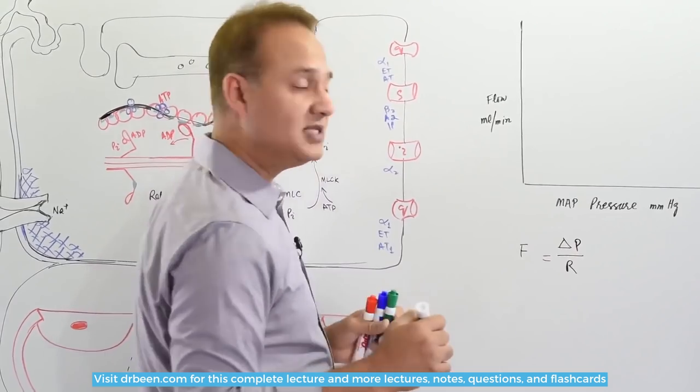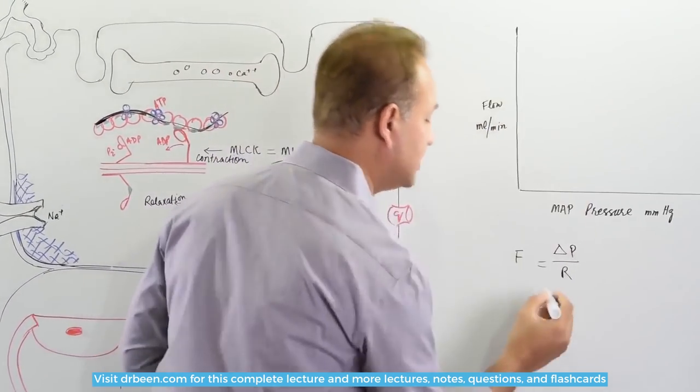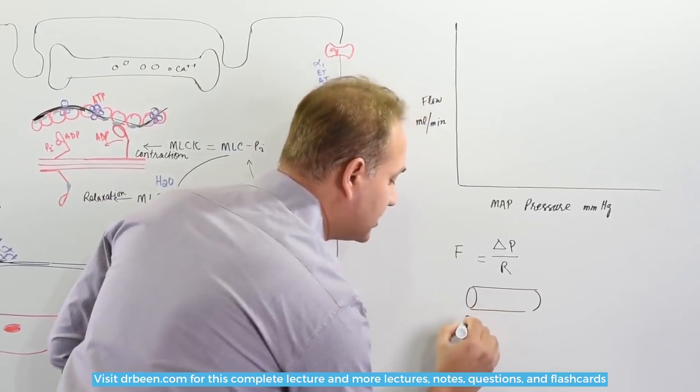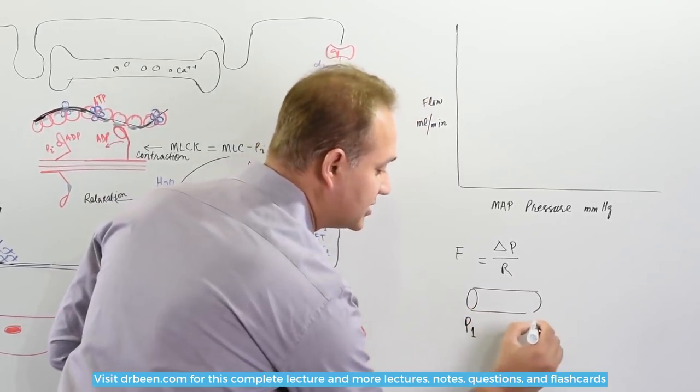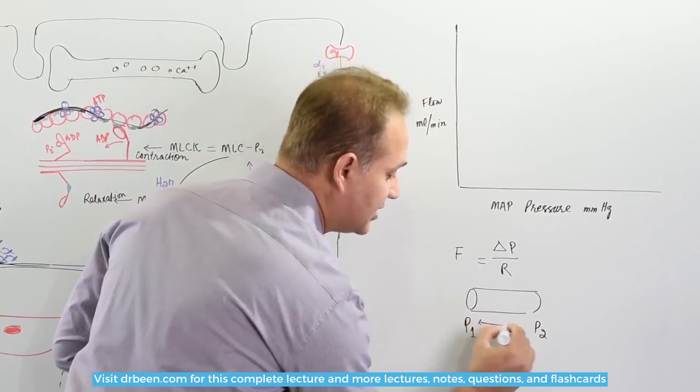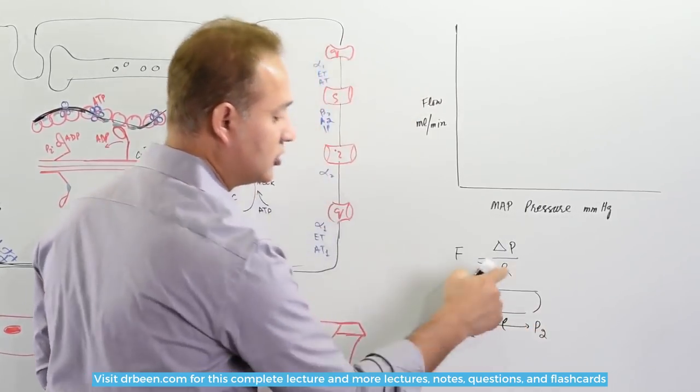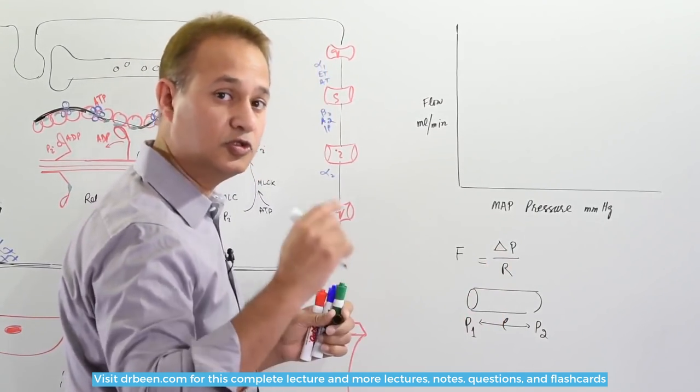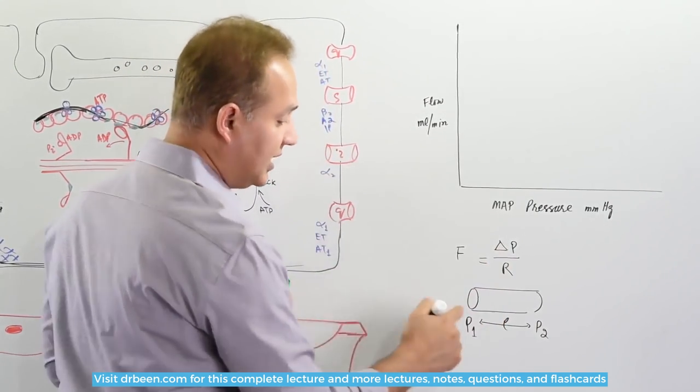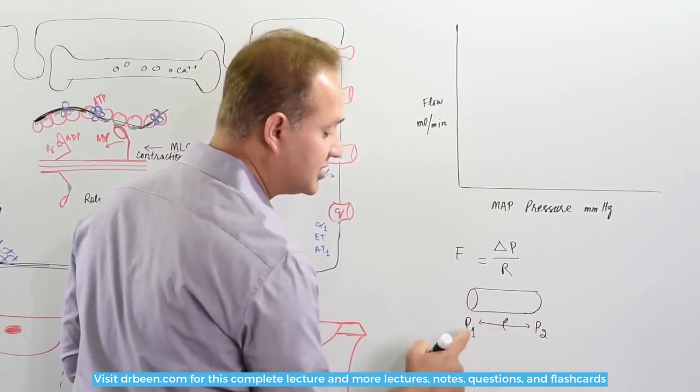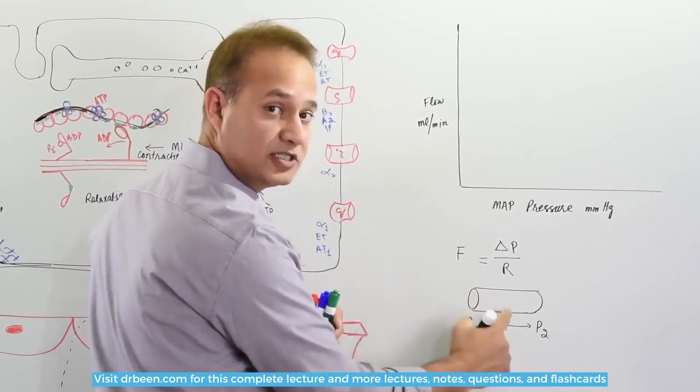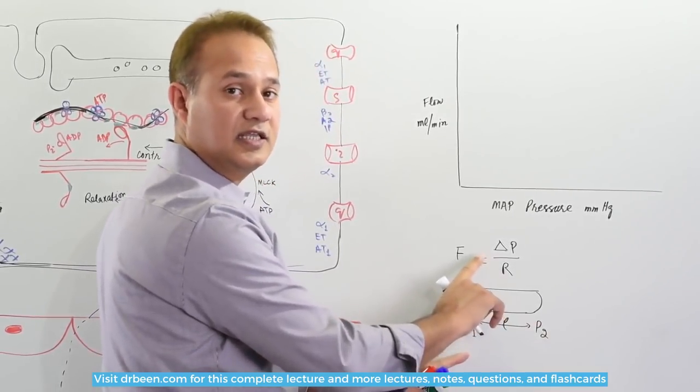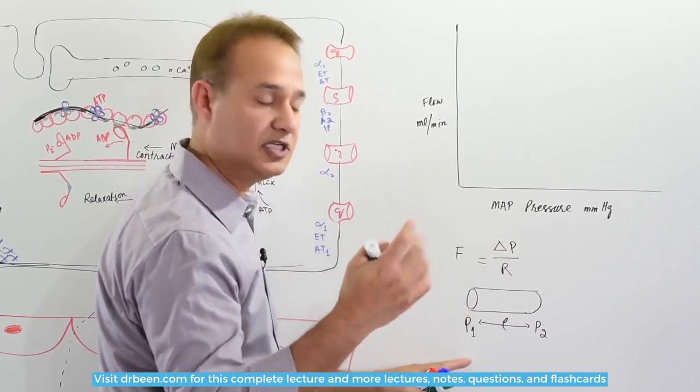So if I have a blood vessel here, this is pressure on one end, this is pressure on the other end, and this is the length of the blood vessel. The diameter and the viscosity would contribute to the resistance. In this blood vessel, the flow is determined by the gradient of the pressure, considering that the resistance stays the same and diameter is not changing.